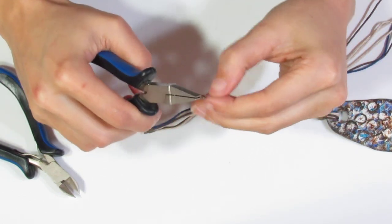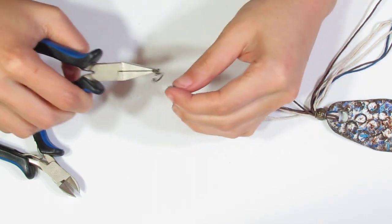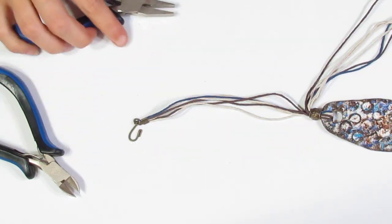Grab a jump ring and the clasp that you have chosen. And attach. And repeat on the other side.